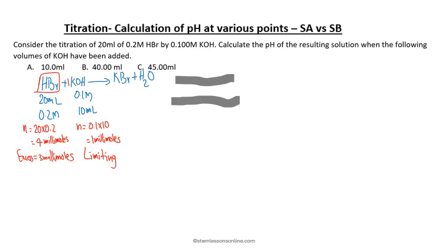Now we have to calculate how much is the hydrogen ion concentration in order to find the pH. So we are going to find the concentration of HBr, that is nothing but molarity. How can I calculate? Number of moles of HBr left divided by total volume in the mixture. What is the number of moles left here is 3. What is the total volume? 20 plus 10 is 30. So 3 divided by 30 is 0.1 molar.